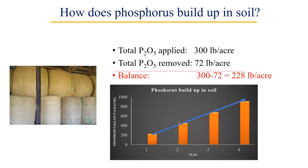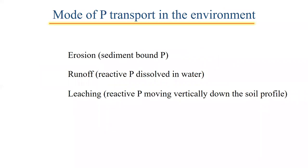If someone is growing bermuda grass year after year and applying poultry litter every year at five tons per acre, and if the soil was previously at medium fertility, it will take four or five years for that soil to reach high fertility for phosphorus. Once it reaches high fertility, there are no yield benefits from adding more phosphorus. At that point, there is no benefit to adding phosphorus, but the continued buildup creates serious environmental challenges.